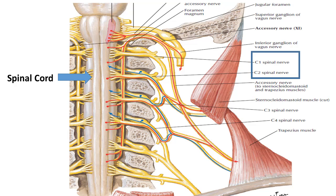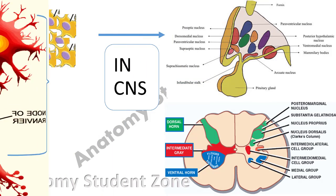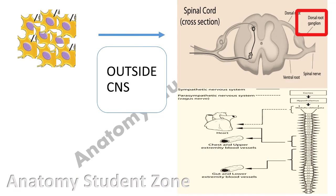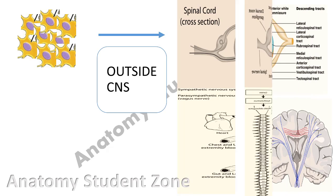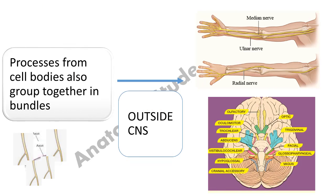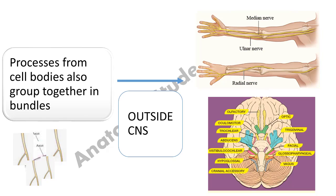Each nerve fiber is an extension of a neuron, and the neuron has two main parts: the cell body and the axon. The cell bodies of neurons in the central nervous system are named nuclei, already covered, or if present in the peripheral nervous system we name them ganglia. Similarly, a collection of axons performing similar functions in the CNS is named a tract, but in the peripheral nervous system we name them nerves, which can be cranial or spinal nerves.